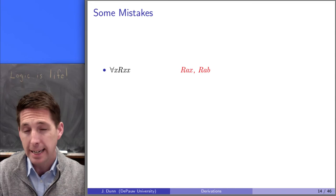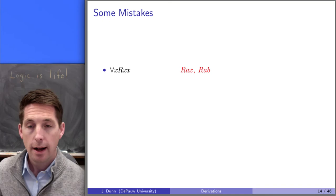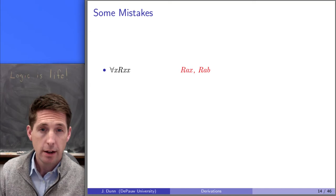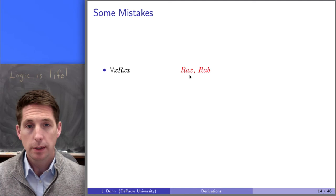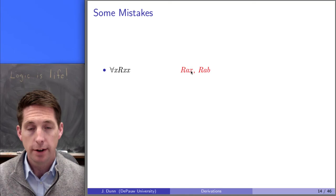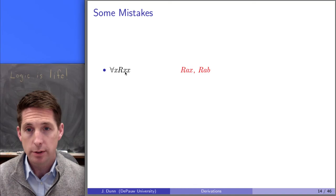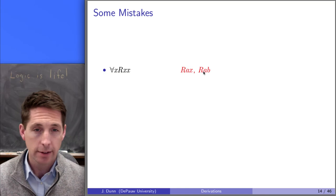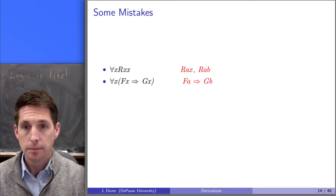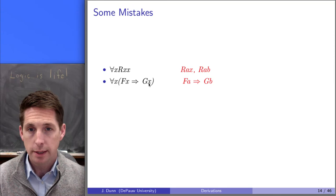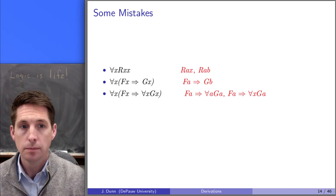Let's talk about a few mistaken applications of the rule. Suppose we have a formula that says everything bears the R relation to itself. Both of these things in red are mistakes. In the first one, we didn't replace all occurrences of x — we have to replace every occurrence, we can't leave variables without quantifiers. In the second application, we made the first x an a and the second x a b — we can't do that. They could both be a or both be b, but we can't switch within one application.